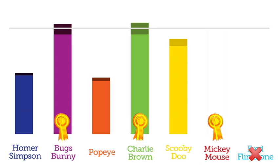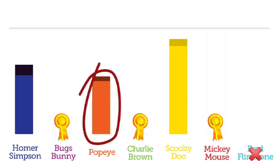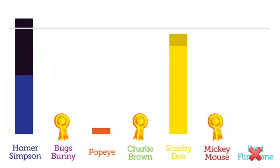So three out of four trustees have already been elected, and the cycle starts again. Charlie and Bugs' votes are weighted down to the size of the surplus, and redistributed between Homer Simpson, Popeye and Scooby Doo, again by the rank preference of the voter. Still, no cartoon has reached the quota, so Popeye is eliminated for having too few votes, and his votes are shared.